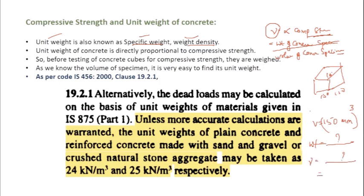So generally a concrete should have a value of 24 and 25 kilonewton per meter cube as the unit weight or specific weight in case of plain concrete and reinforced concrete. So in case of plain concrete, gamma equals 24 kilonewton per meter cube. And in case of reinforced concrete, gamma equals 25 kilonewton per meter cube. So you can compare with the standard values. This clause is obtained from Indian standard 456, 2000, clause number 19.2.1.